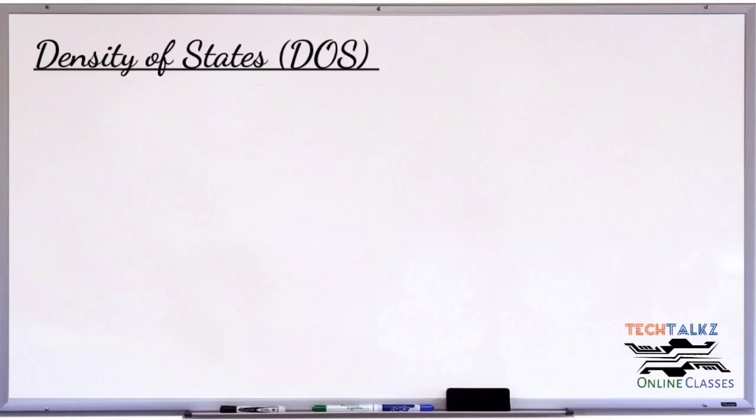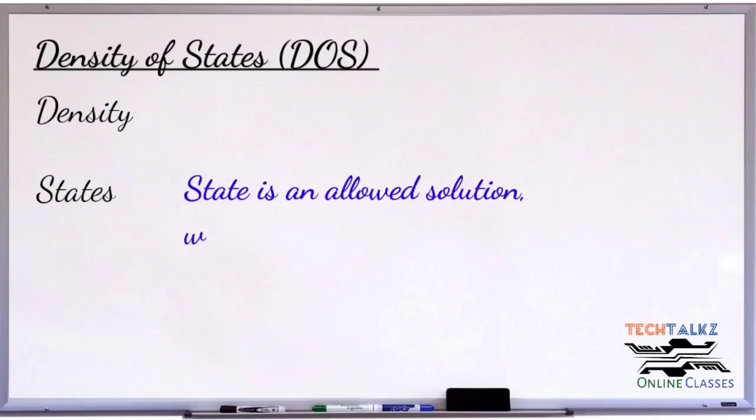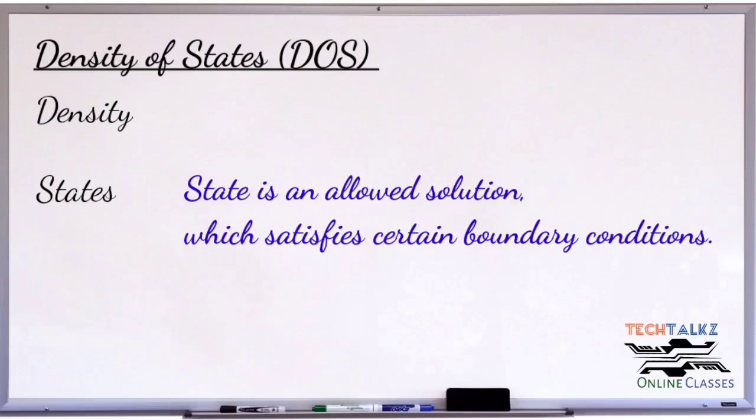From the title, there are two words: density and states. Density means something to do per unit volume. States: a state is an allowed solution which satisfies certain boundary conditions.